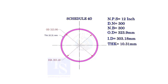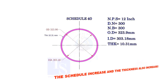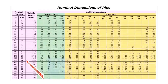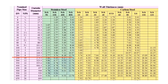Let us check the dimensions of the same size pipe with a higher schedule. As the schedule increases, the OD remains constant, the ID decreases, and the thickness increases. Compare the thickness of an 8 inch pipe in the chart — you can see the thickness increases as the schedule increases.